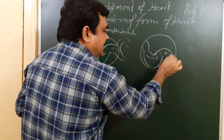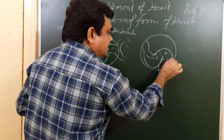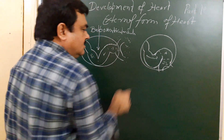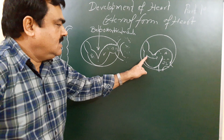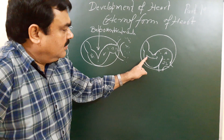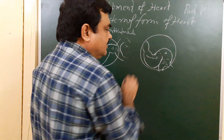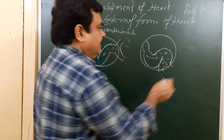This is atrium, this is sinus venosus. Now this absorbs into the ventricle. After absorption into the ventricle, it takes shape.